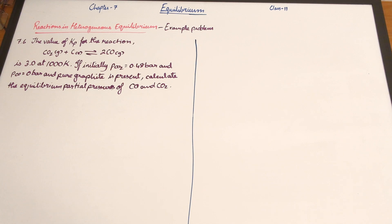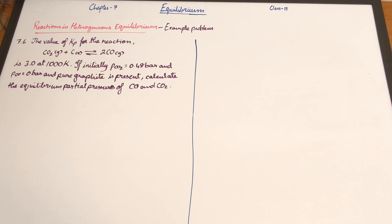The value of Kp for the reaction CO2 plus C gives rise to 2CO is 3.0 at 1000 Kelvin. If initially the partial pressure of carbon dioxide is 0.48 bar, the partial pressure of carbon monoxide is 0 bar, and pure graphite is present, calculate the equilibrium partial pressures of carbon dioxide and carbon monoxide.